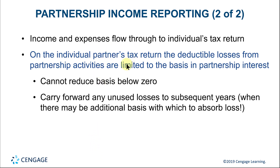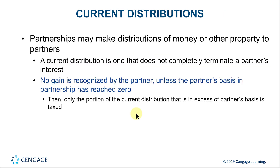The basis of a partnership interest cannot go below zero. If there are losses remaining after basis reaches zero, those losses are carried forward to future years when there is additional basis — through additional contributions or additional income allocated to the partner. Distributions are generally tax-free as long as the partner has basis in his or her partnership interest, and they reduce that basis. Once the basis reaches zero and distributions continue, anything beyond that is generally treated as a capital gain.